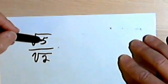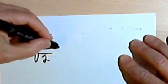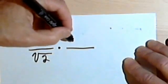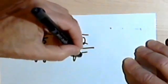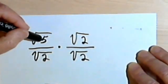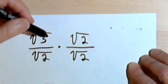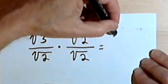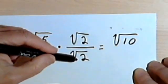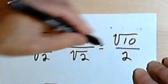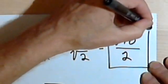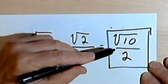Here's one with a square root in both the numerator and the denominator. Remember, all I want to do is get rid of the square root in the denominator. So I'm going to multiply by the fraction square root of 2 over the square root of 2. The numerator, using the product rule, would be the square root of 5 times the square root of 2, which equals the square root of 10. The denominator, square root of 2 times the square root of 2, is just going to equal 2. I can't simplify the square root of 10, so my answer is the square root of 10 over 2.